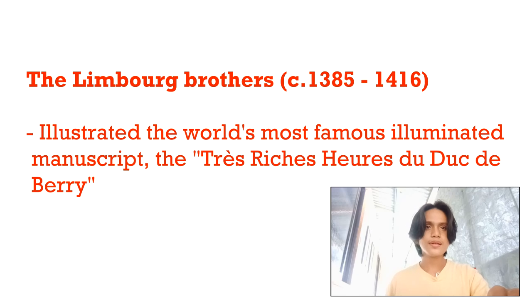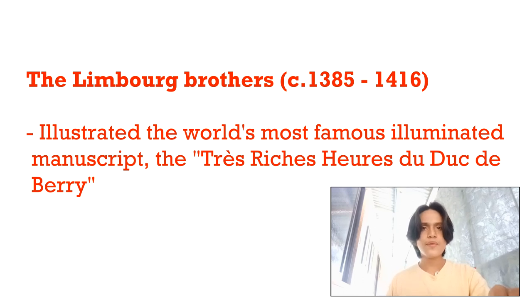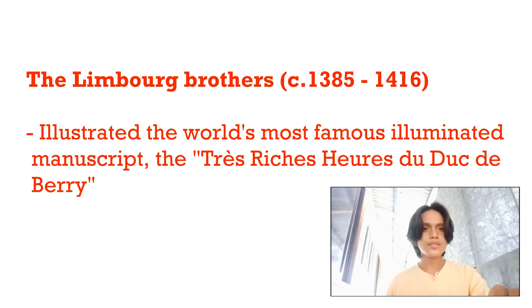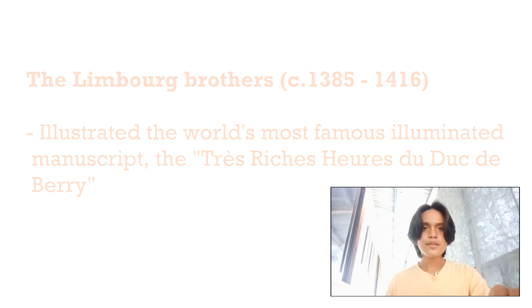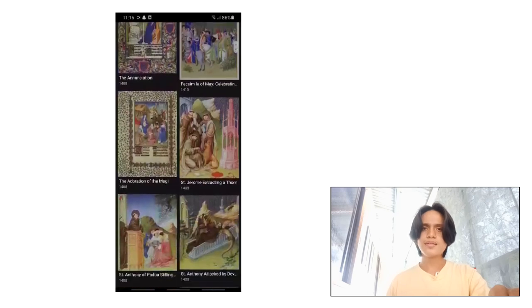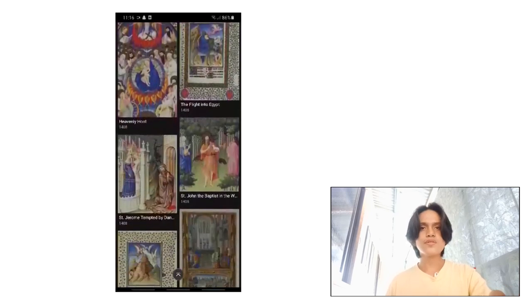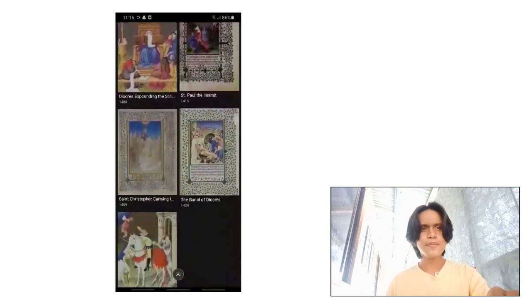The Limbourg Brothers — Hermann, Paul, and Johan — were famous Dutch miniature painters from the city of Nijmegen. They were among the first illuminators to render specific landscape scenes such as the environs and the appearance of their patrons' castles with great accuracy and sensitivity. Together, they synthesized the innovations of illuminators and developed personal styles characterized by subtlety of light, painstaking technique, and minute rendering of detail. Their masterwork, left unfinished at their death and completed by Jean Colombe, is one of the landmarks of the art of book illumination and greatly influenced early Netherlandish art in the 15th century.